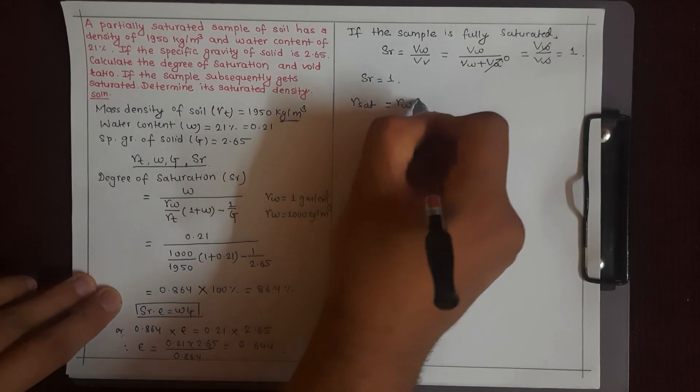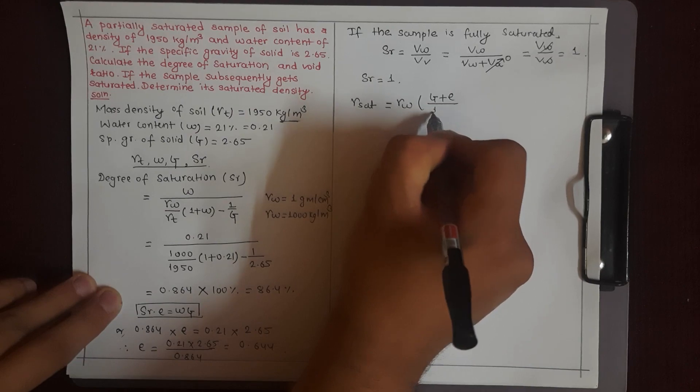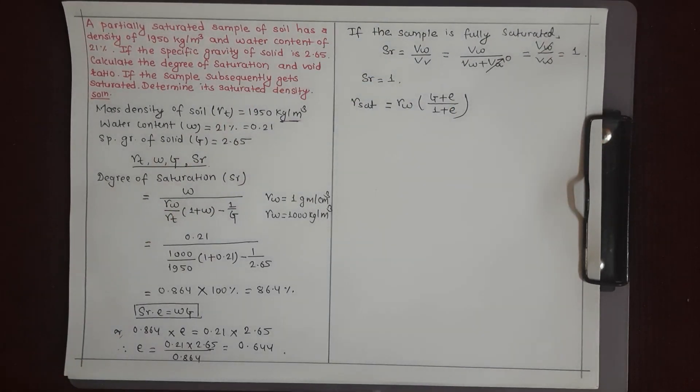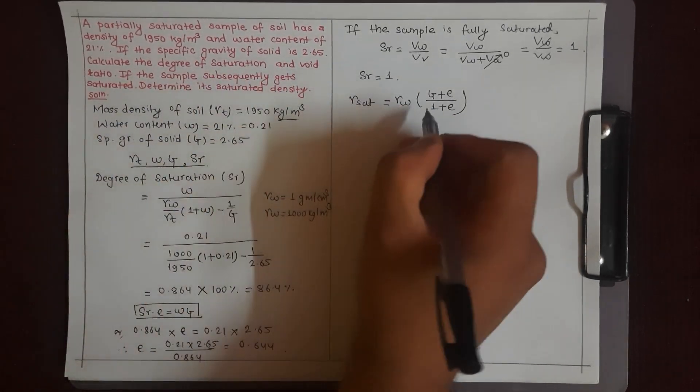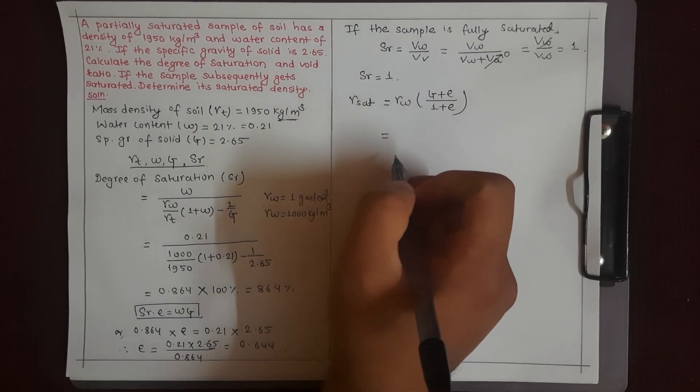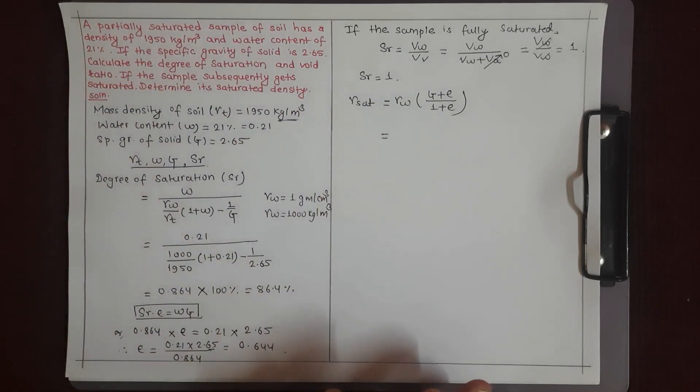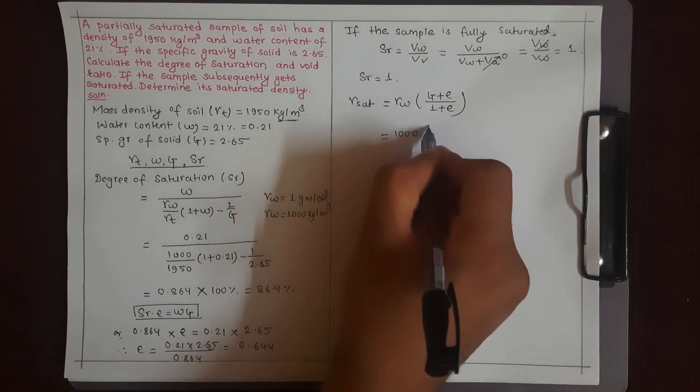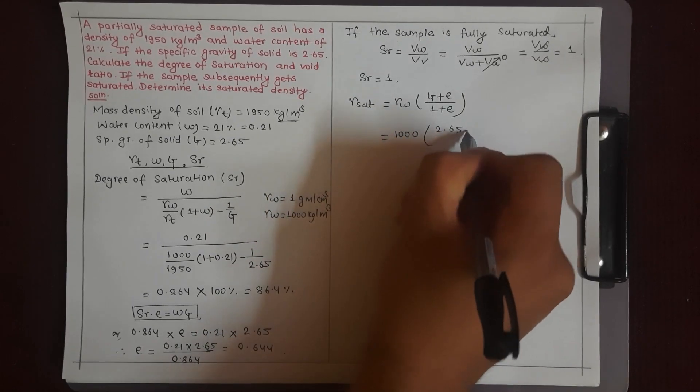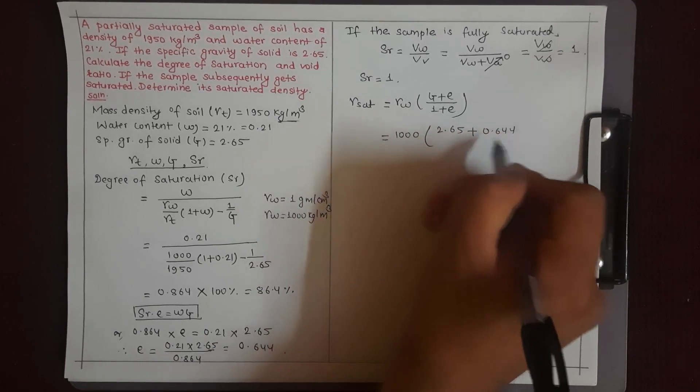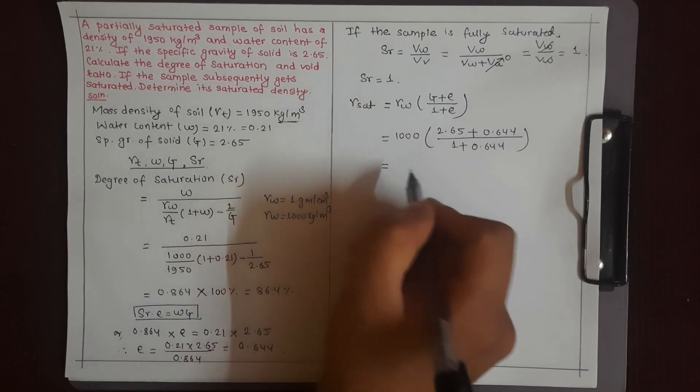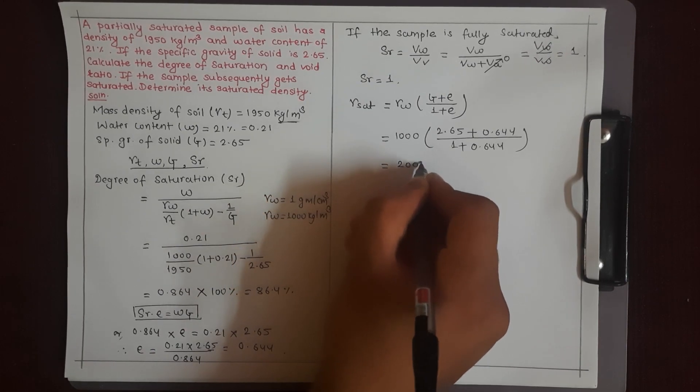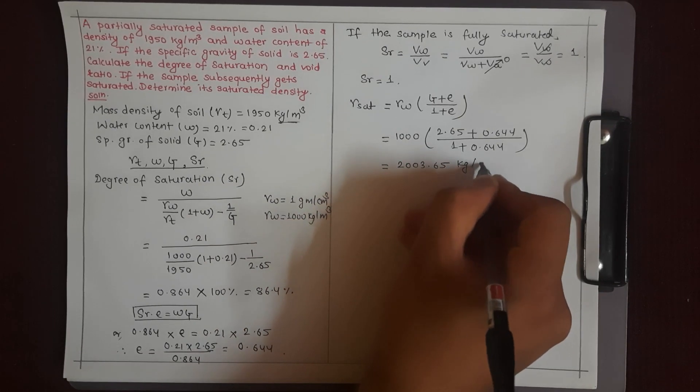The formula for saturated density is gamma sat equals gamma w times G plus e by 1 plus e. Gamma w is 1000, G is 2.65, plus void ratio 0.644, divided by 1 plus 0.644. This gives gamma sat equals 1000 times 3.294 divided by 1.644, which equals approximately 2000 kg per meter cubed.